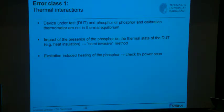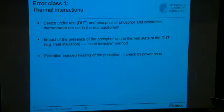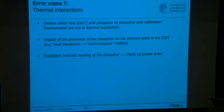There is another impact: you may heat the phosphor with the laser pulse. You shoot perhaps a millijoule onto a certain area and part of that energy will be absorbed. Most of the absorbed energy causes the electronic excitation from which phosphorescence takes place, but a larger part heats up the phosphor itself. This should be assessed in a power scan, and in the high-speed thermometry application example I will show the impact — it can easily be a couple of Kelvin.